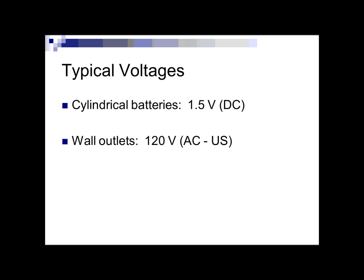Some typical voltages you'll want to know. Cylindrical batteries — triple A, double A, C, and D batteries — have a voltage of 1.5 volts. That's why you cannot get shocked off of them; there's not a lot of push. Wall outlets in the US are 120 volts. Batteries are direct current — a one-direction push — whereas the outlets in the wall push back and forth, so alternating current.